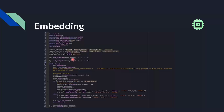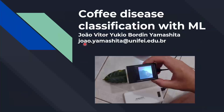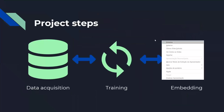The code is available in the Hackster post. If you want to see more, just Google 'coffee disease classification with ML' and you will find it.